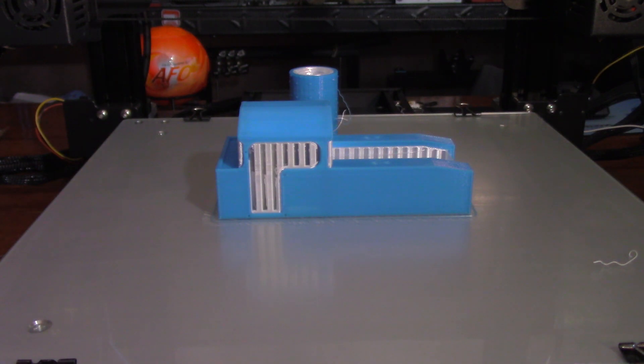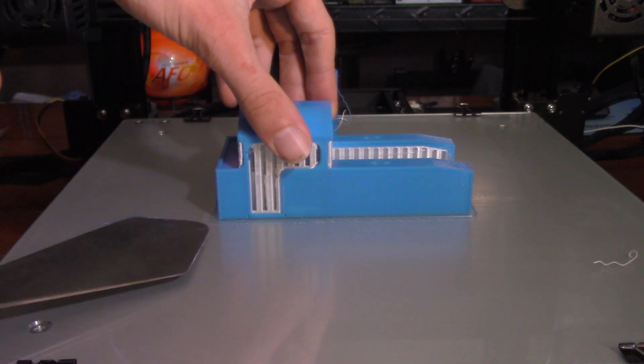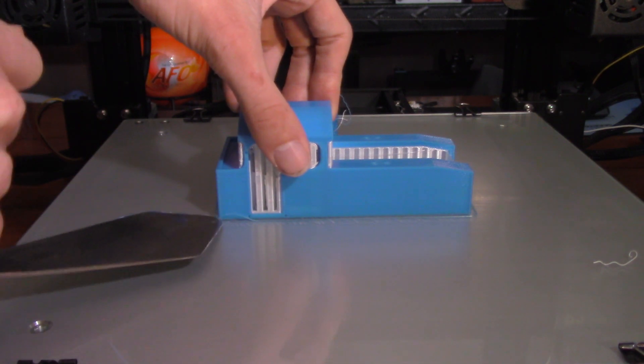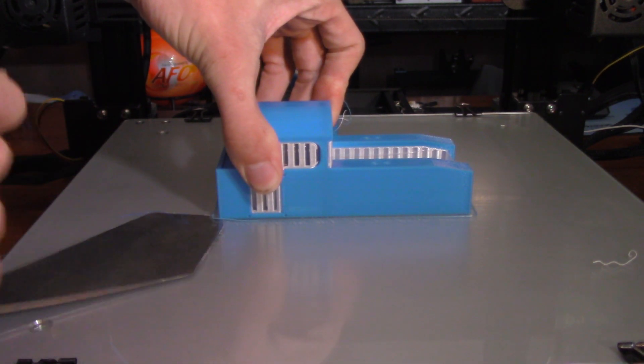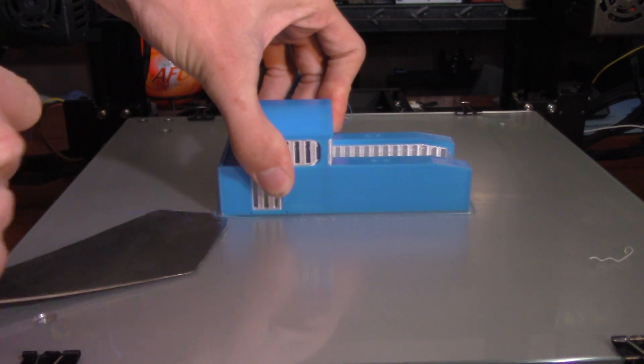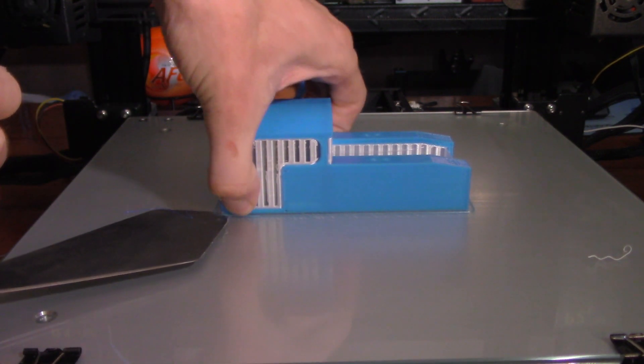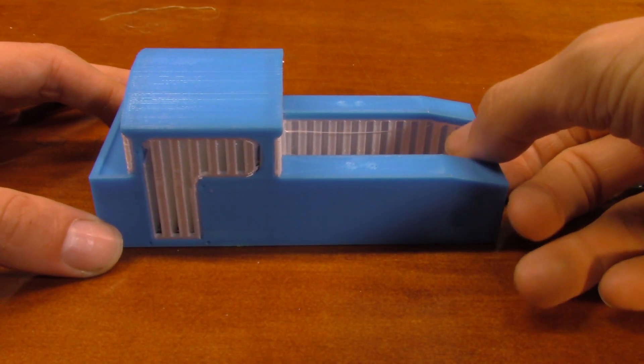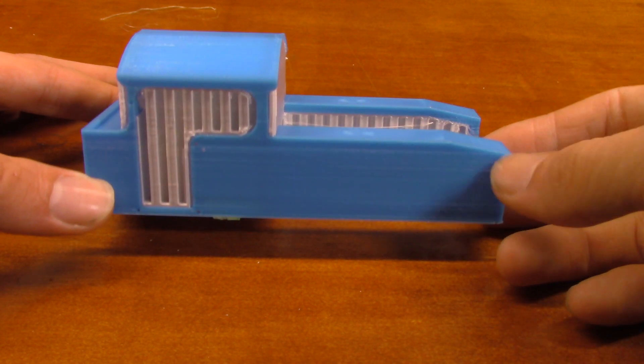Of course he used the BuildTac spatula to remove this print, which I always like to do on the glass. It makes life a whole lot easier. You don't have to worry about whacking your fingers off because it's not a sharp tool. As you can see, the print looks really good on the outside.